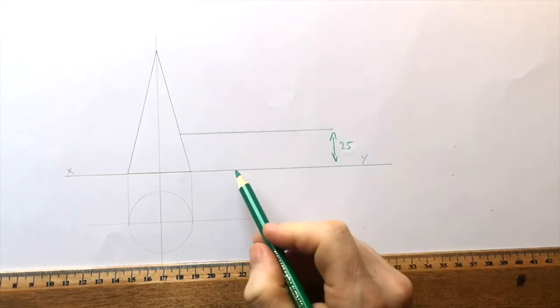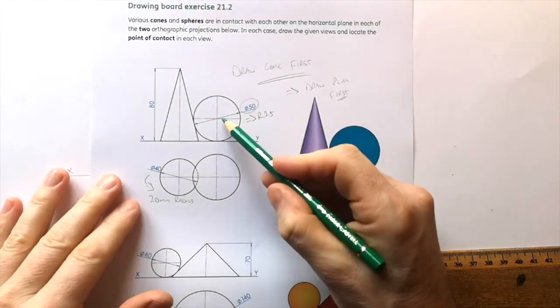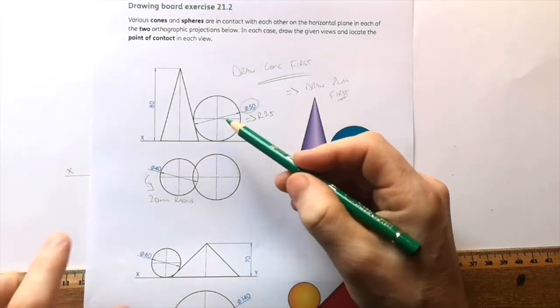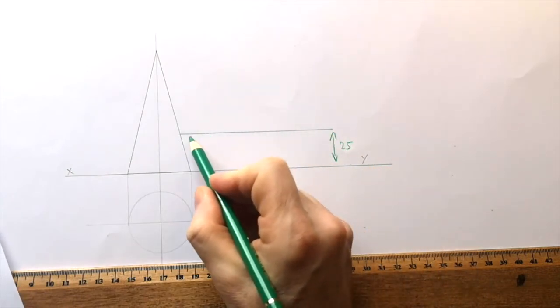So that is 25 from the x-y line. So the center, if the little sphere here is sitting on the ground, well, the center has to be 25 off the ground because that's the radius. So that's a collection of all the points that are 25 millimeters off the ground.